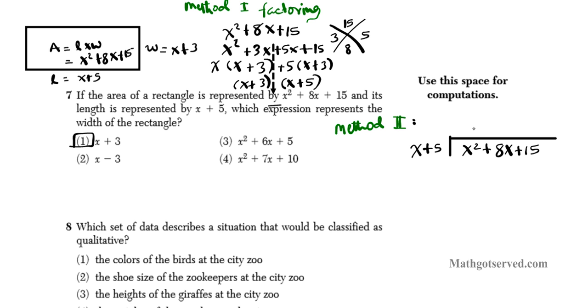So whatever we get, that will be the width. So how do we do this? x goes into x squared how many times? x times, because x times x is x squared, and then we distribute x to 5 plus 5x. Now we just subtract, 8 minus 5 is 3x plus 15. You drop that down. Now how many times does x go into 3x? x goes into 3x three times, so 3 times x is 3x, 3 times 5 is 15, subtract again, and your final answer is 0. You can clearly see that x plus 3 is our answer again.